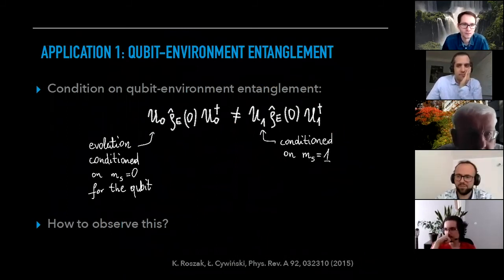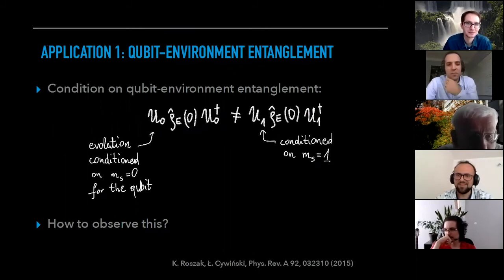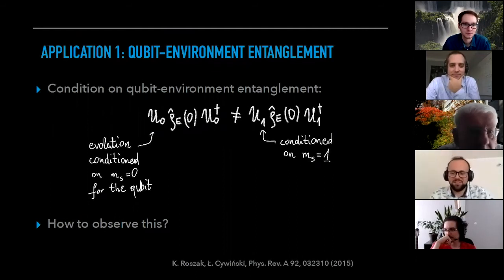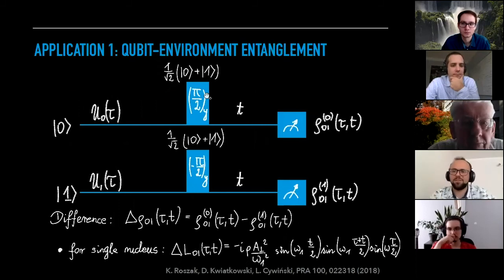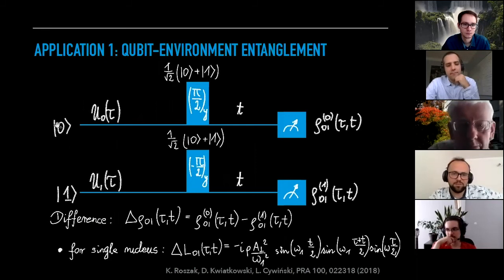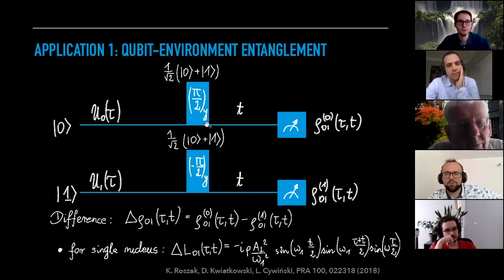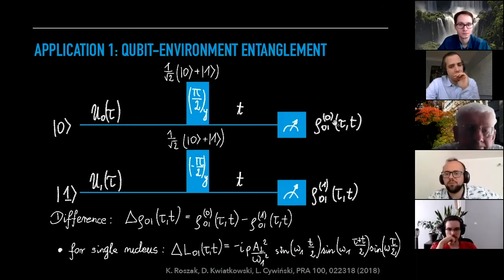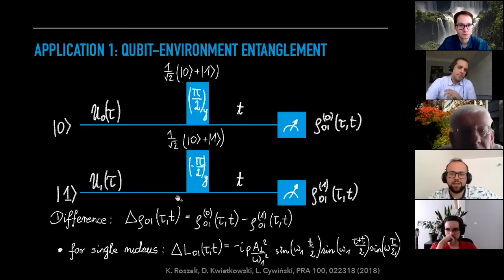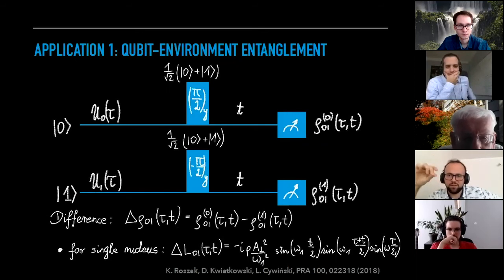Around polarized nuclear spins: if you have any polarization inside the bath you can observe qubit-environment entanglement. The experiment: initialize the NV center in zero state, wait some time, apply pi-over-two pulse to create superposition, wait and measure coherence. Then do the same starting with the initial one state of the qubit, and look at the difference of coherences. If it's non-zero, some environmental spins are entangled with the qubit in the course of this evolution. The zero state of the NV center corresponds to multiplying the coupling by zero — the NV center is not interacting with the spins — while in state one it is interacting, and this difference can cause entanglement.